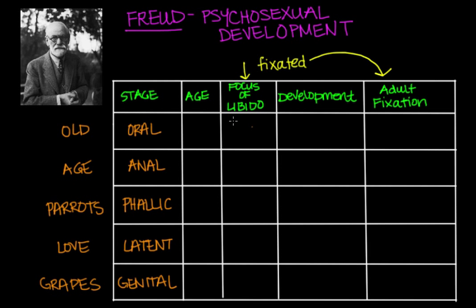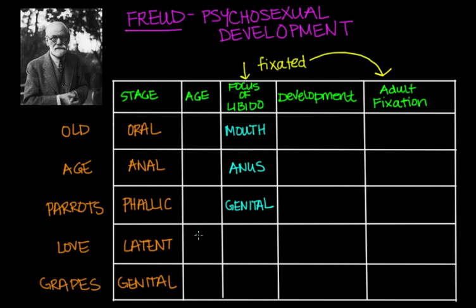Fixation of libido is focused on different parts of the body depending on which stage we're at. For the oral stage, the libido is focused on the mouth. The anal stage is associated with the anus. The phallic stage involves the genitals. The latent stage doesn't have a specific body focus. And the final genital stage is again associated with the genitals.